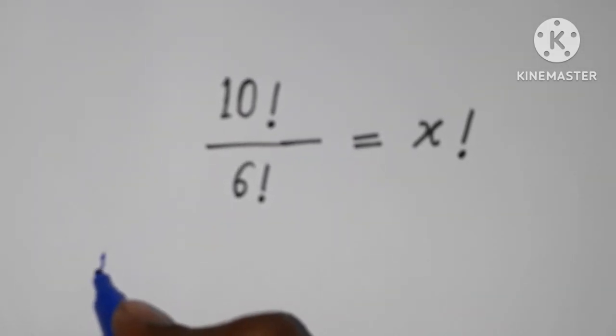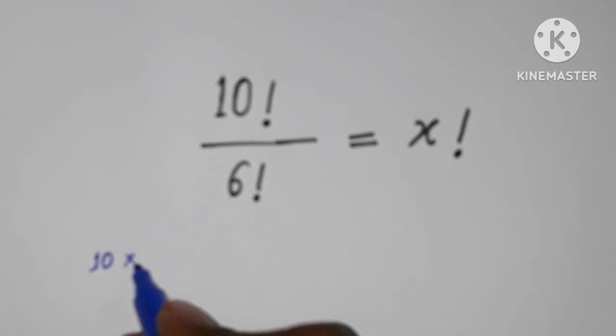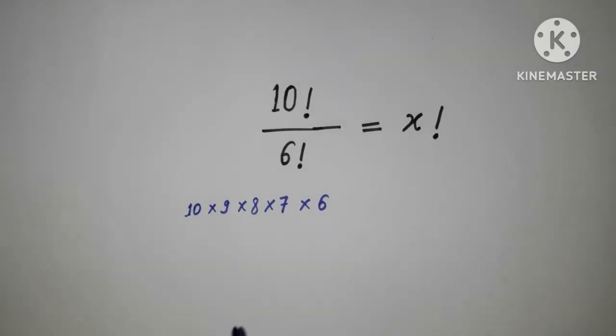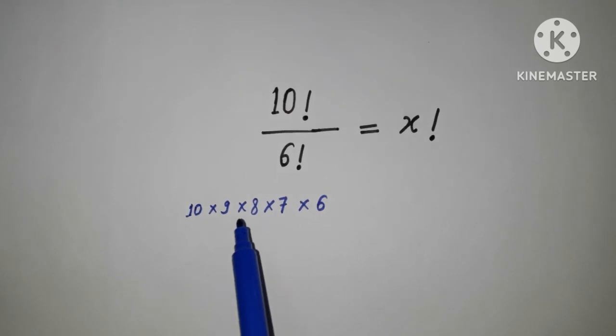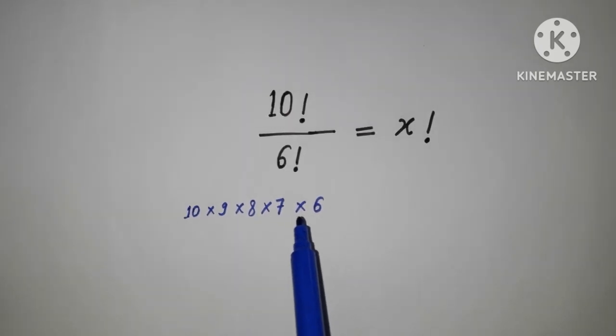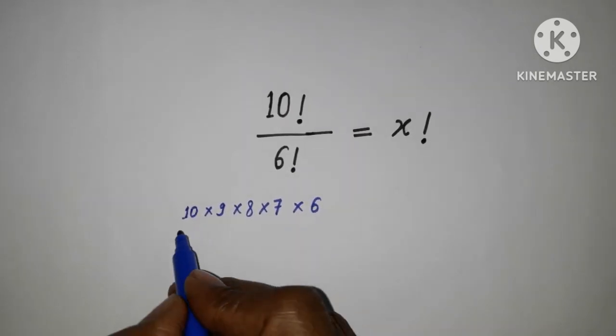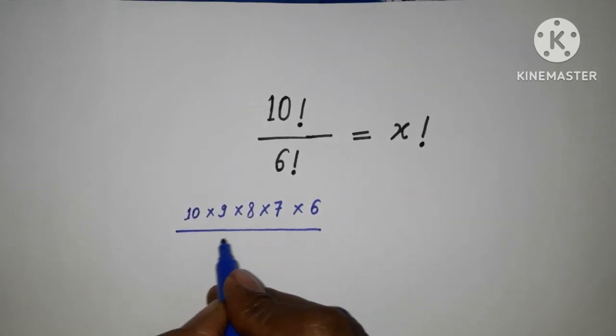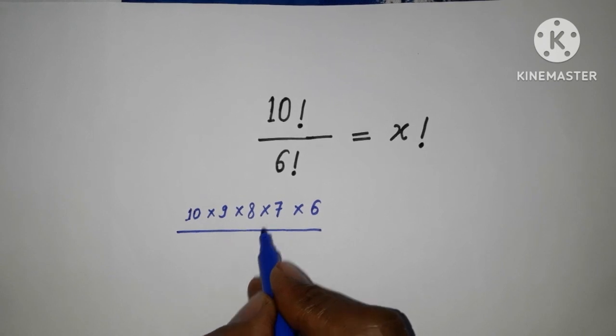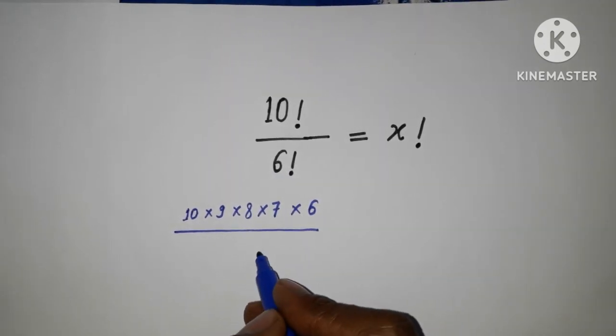Factorial 10 can be solved in this way: 10 factorial, so 10 into 9 into 8 into 7 into 6, up to 6 I'm done. And then divided by 6 factorial can be written, 6 up to 6 it is.